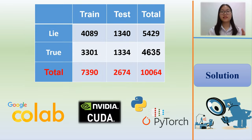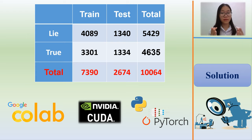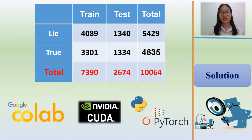The training set is augmented using conventional image transformation where it is randomly sheared, shifted, flipped, and zoomed — accounting for possibilities of various angles, brightness levels, or blurriness due to low-quality cameras. Finally, we obtained a total of 10,064 images including 5,429 lie and 4,635 true statements, which were then split for training and testing.